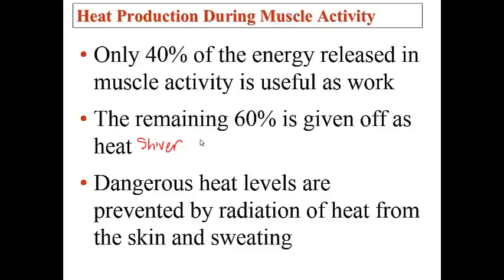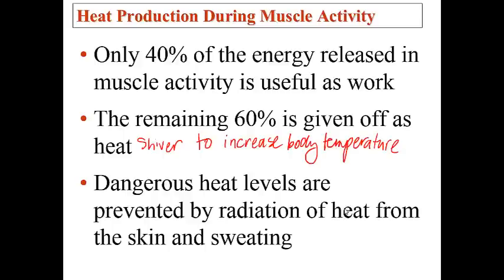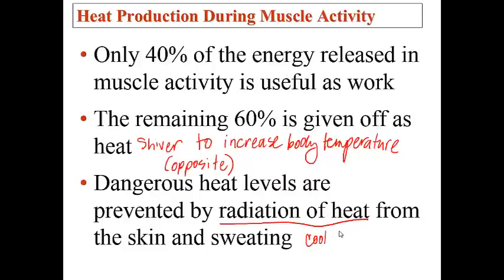Skeletal muscles shiver to increase body temperature. From a homeostatic and protective standpoint, dangerous heat levels are prevented from overheating the body through radiation of heat from the skin and through sweat. Shivering is to generate body heat to warm up, whereas when we are sweating heavily, heat is released by radiation to help us cool down.